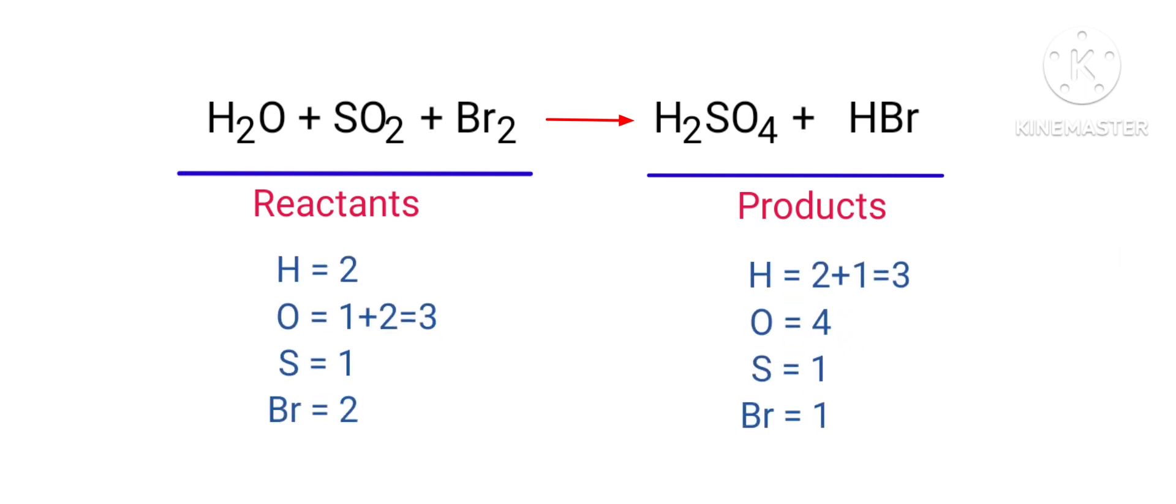If you look at this equation, the equation is not balanced. In the reactants side there are two hydrogen atoms, three oxygen atoms, one sulfur atom, and two bromine atoms present. And in the products side there are three hydrogen atoms, four oxygen atoms, one sulfur atom, and one bromine atom present. The equation is not balanced on both sides.